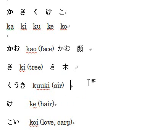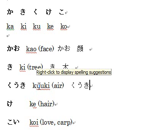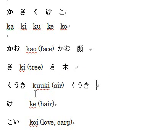Next is 'kuuki.' Ku is K-U, then U is just U, and then K-I. You may have noticed — ku is K-U, and then U makes it a long vowel. So we pronounce this as 'kuuki.' The kanji for 'kuuki' is this one, and it means air.